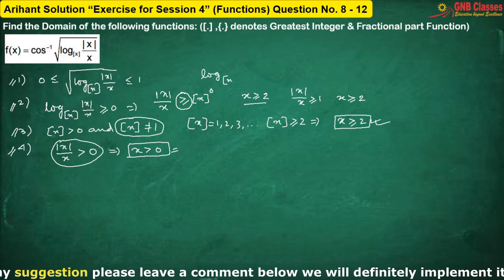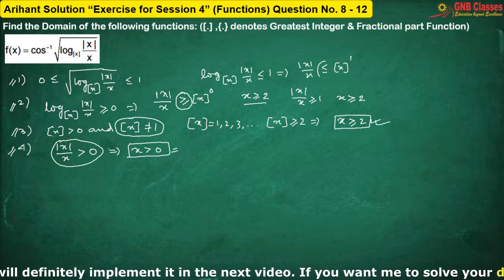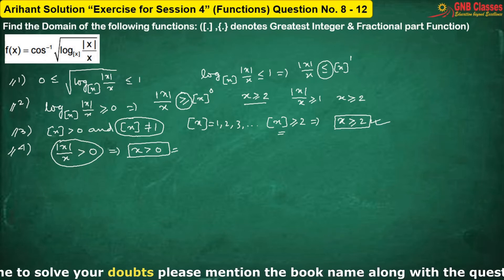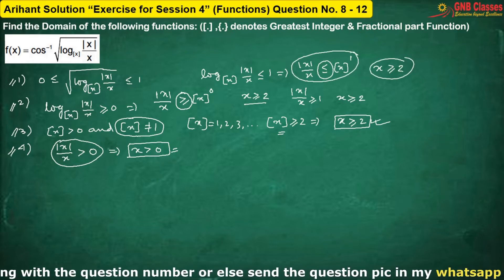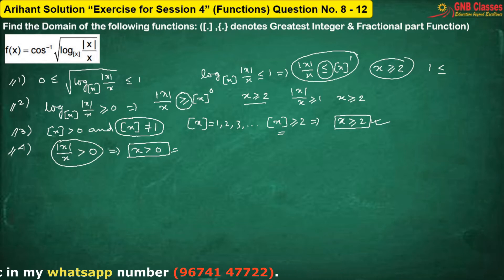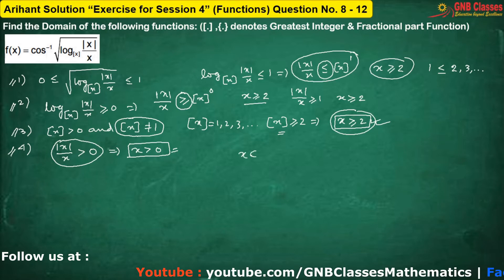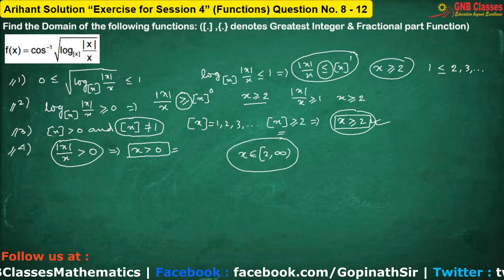For the first condition, with the same logic I have not changed the sign because floor(x) ≥ 2, i.e., x ≥ 2. For x ≥ 2, mod(x)/x gives you 1, which is always less than or equal to 2 or higher values. So x ≥ 2 satisfies all four conditions. Therefore, the required domain is x belongs to [2, +∞).